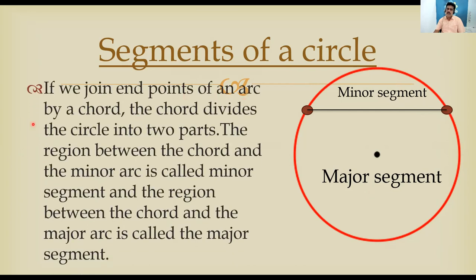If you join the endpoints of an arc by a chord, the chord divides the circle into two parts. The region between the chord and the minor arc is called the minor segment. The region between the chord and the major arc is called the major segment. This is what is meant by segments of a circle.